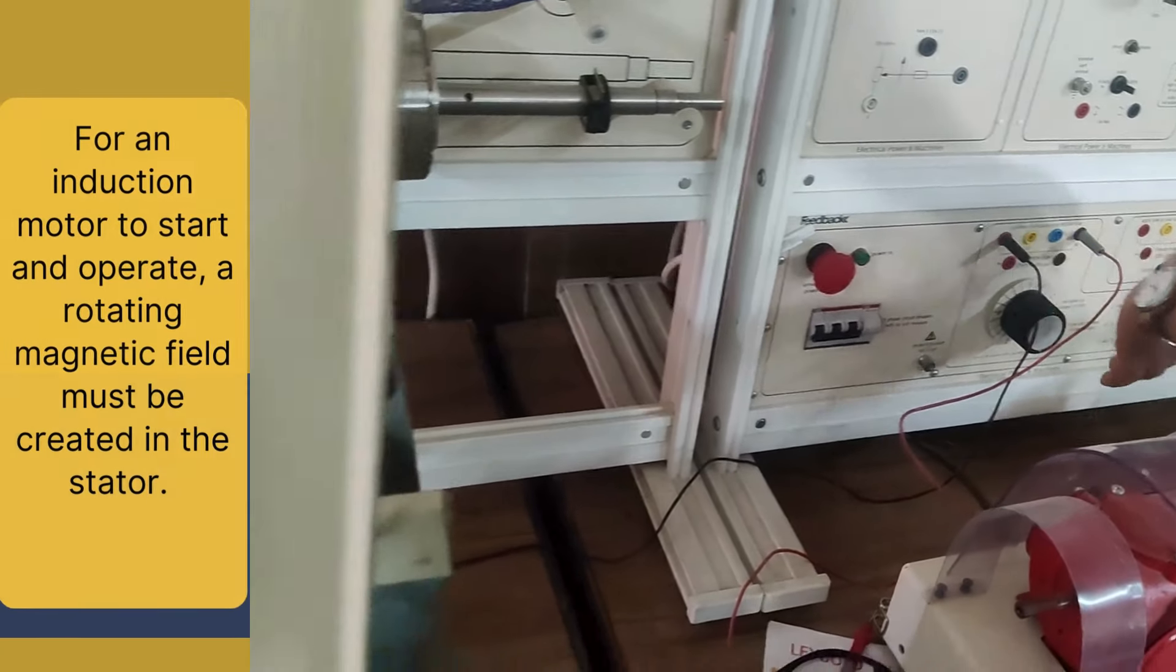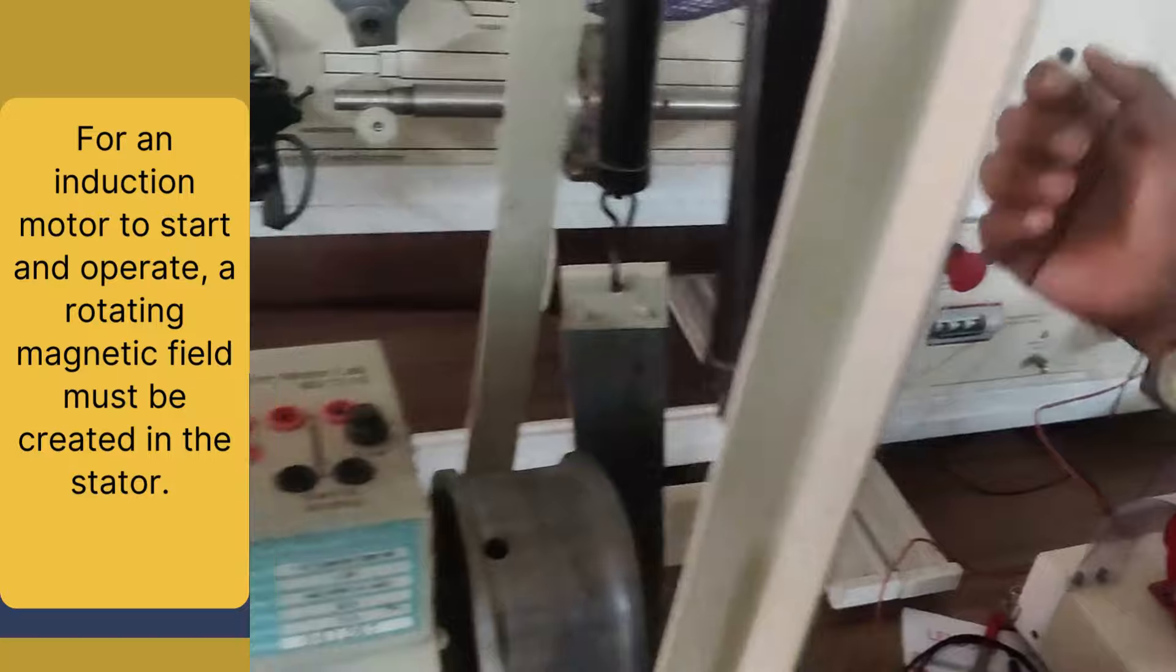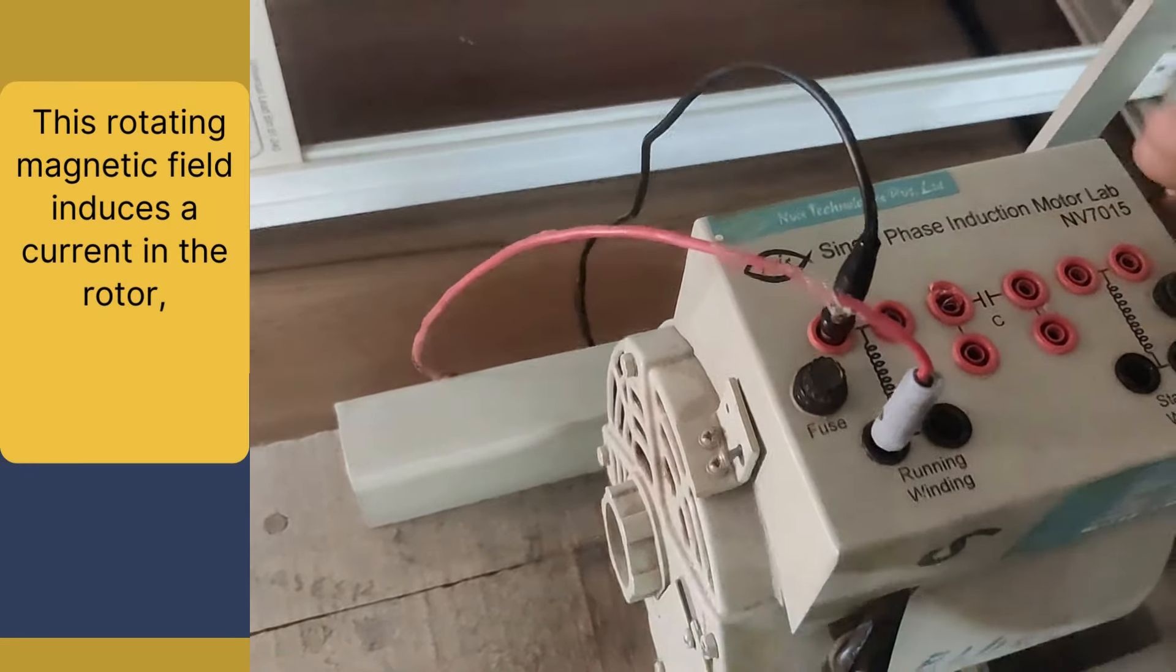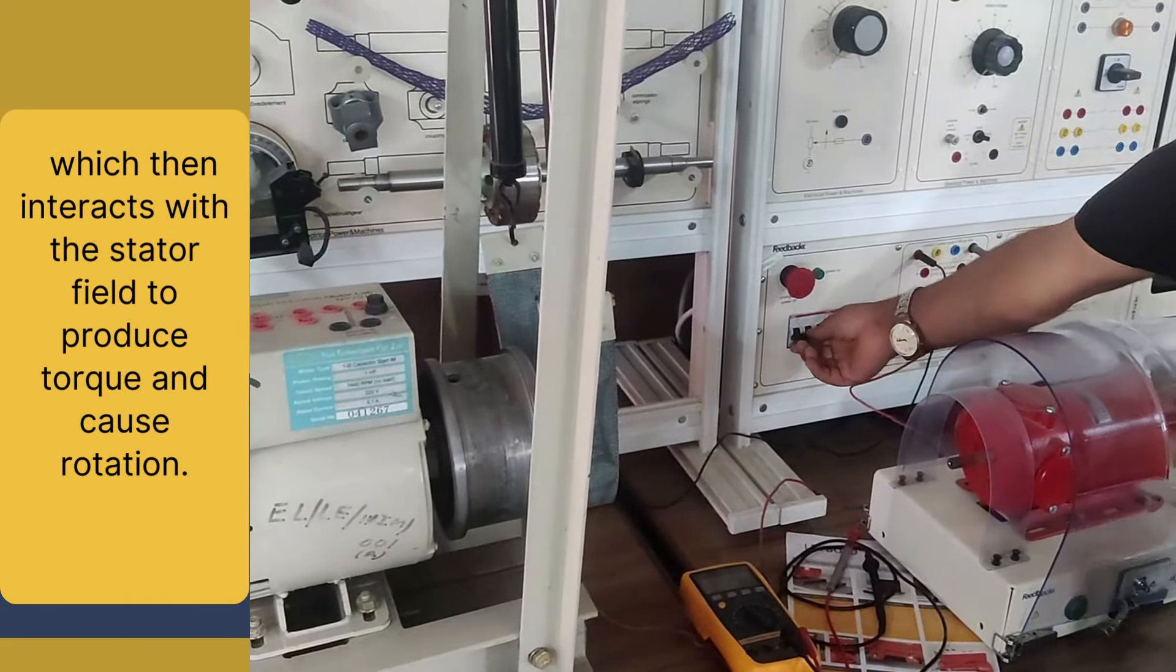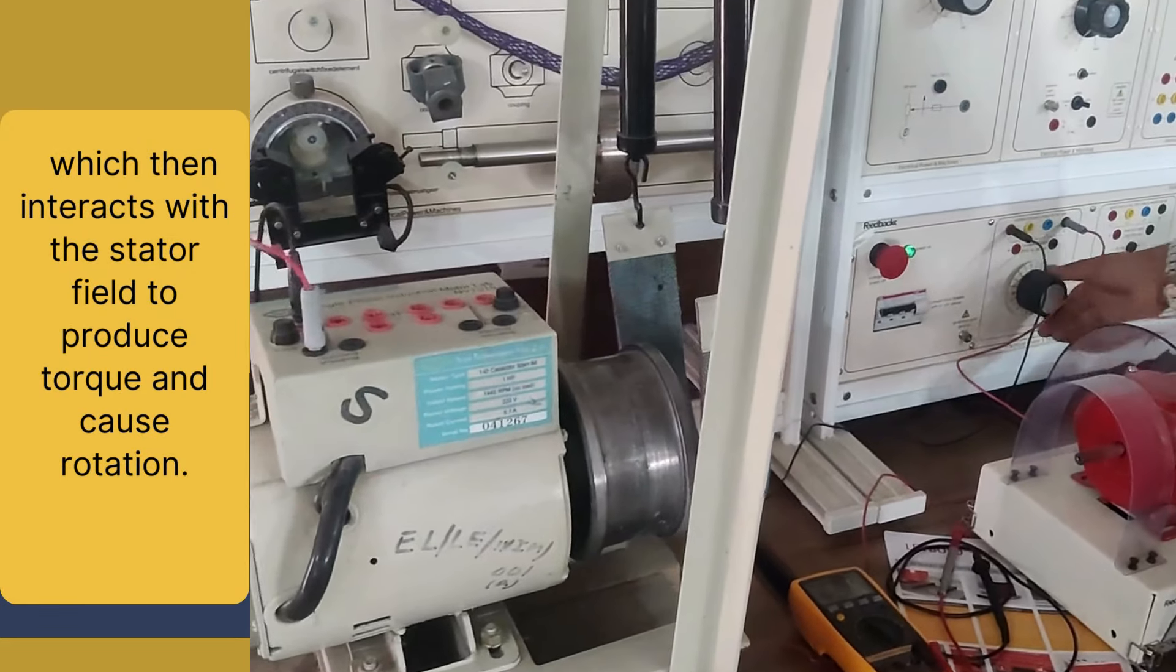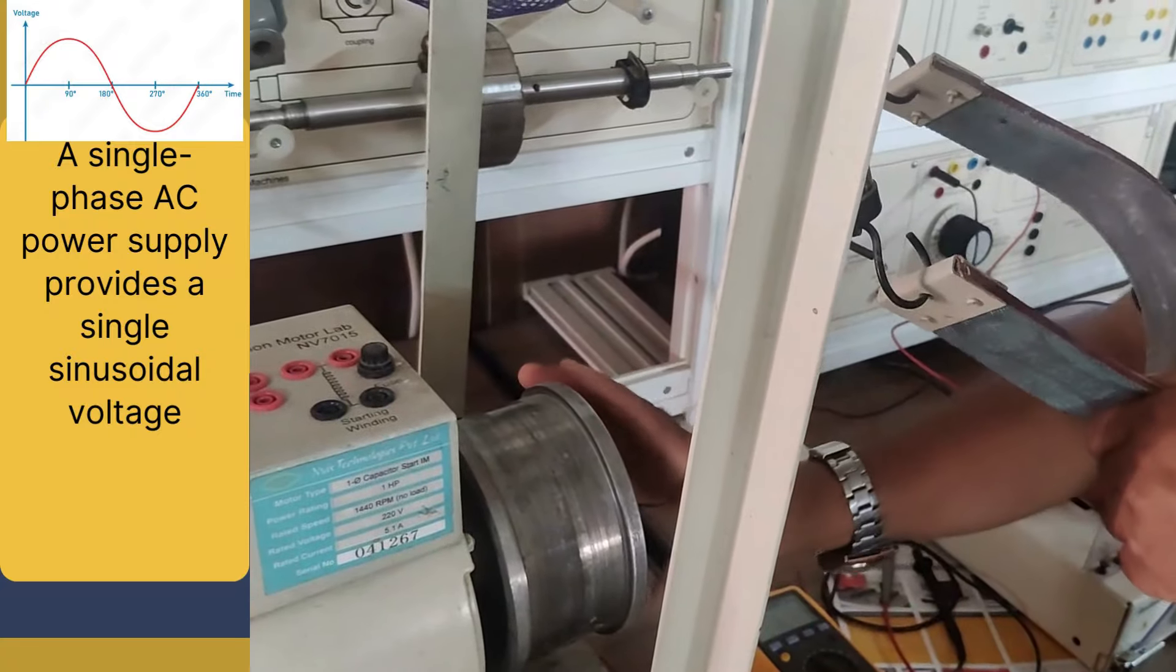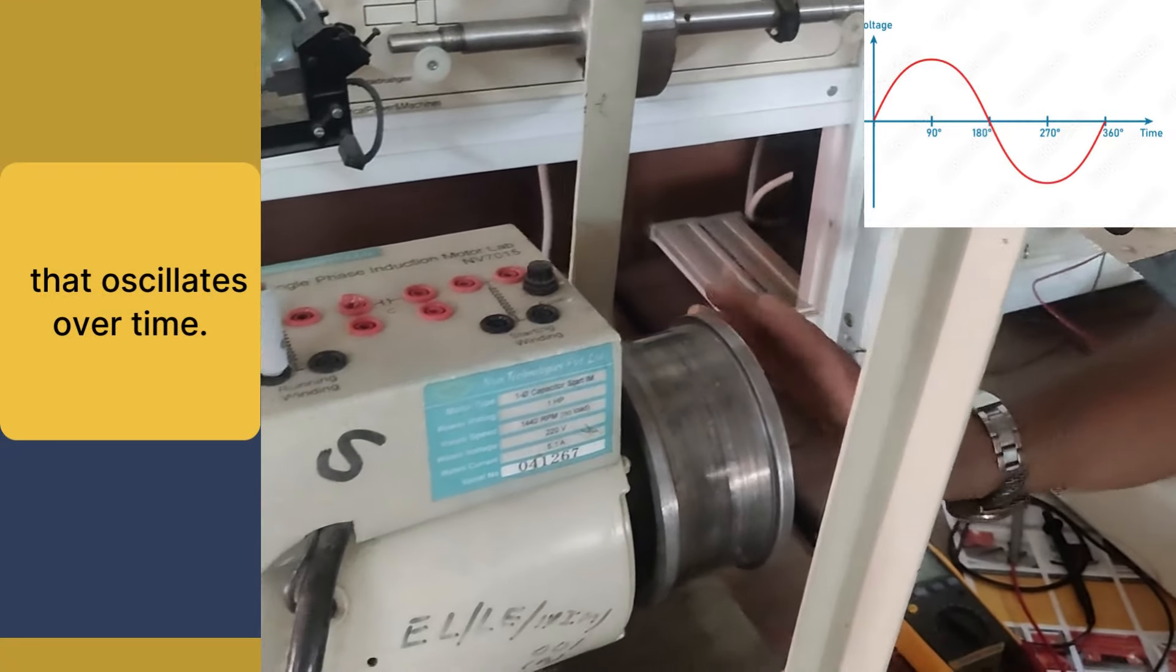For an induction motor to start and operate, a rotating magnetic field must be created in the stator. This rotating magnetic field induces a current in the rotor, which then interacts with the stator field to produce torque and causes rotation.